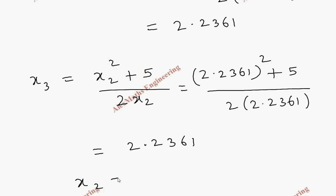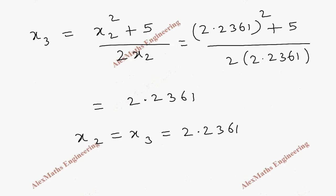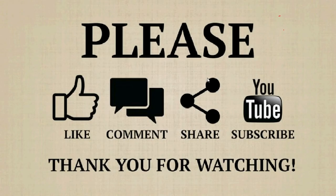So x2 equal to x3, which is 2.2361. So we can say the better approximate root is 2.2361.